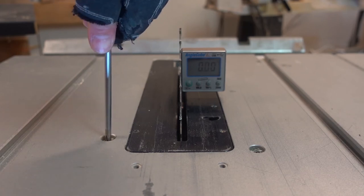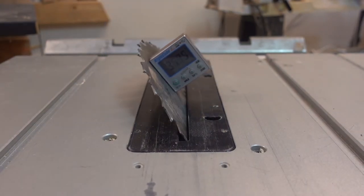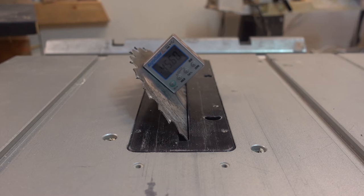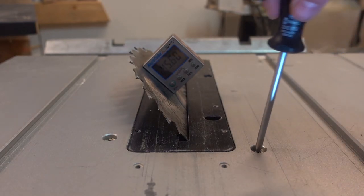Then I adjust the blade to its 45 degrees stop. Here it's also 0.6 degrees off. I do the same thing here. Loosen the lever and adjust the screw while turning the wheel to 45 degrees.